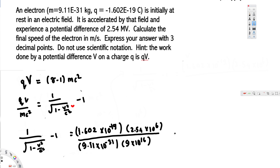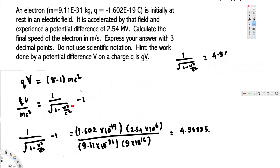If you simplify this, you get 4.96835. So this is the value for that part. Now rearranging the equation: 1 over the square root of 1 minus v squared over c squared, bringing the minus 1 to the other side, gives us 4.96835.